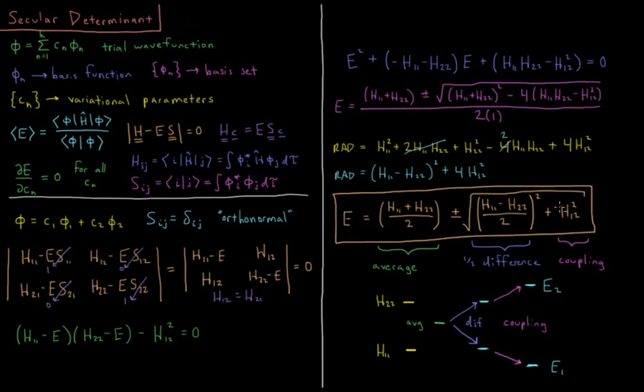But then what about this last term, h12 squared? This is what we call a coupling element. In the matrix, it's a non-diagonal element. It's the value that determines how strong phi1 and phi2 are coupled to one another. If their coupling is quite weak, they only move a little bit from their reference energy states. If it's strong, they move a lot. It takes that half difference and it adds to it quadratically. The bigger h12 gets, the more they're going to couple.